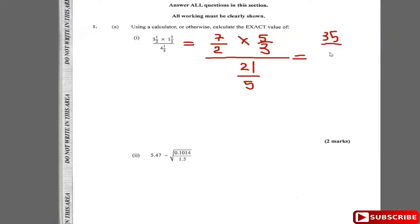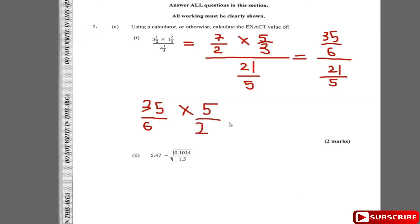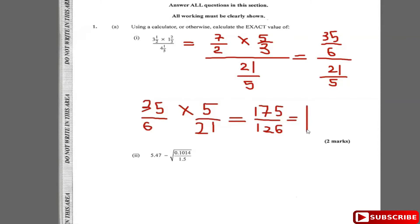So you get thirty-five over six, and that's divided by twenty-one over five. When you're dividing, you change division to multiplication and flip the second fraction, so it becomes thirty-five over six multiplied by five over twenty-one. Working that out: thirty-five times five is 175, and six times twenty-one is 126. So the answer is 175 over 126, which converts to the mixed number one and 49 over 126.